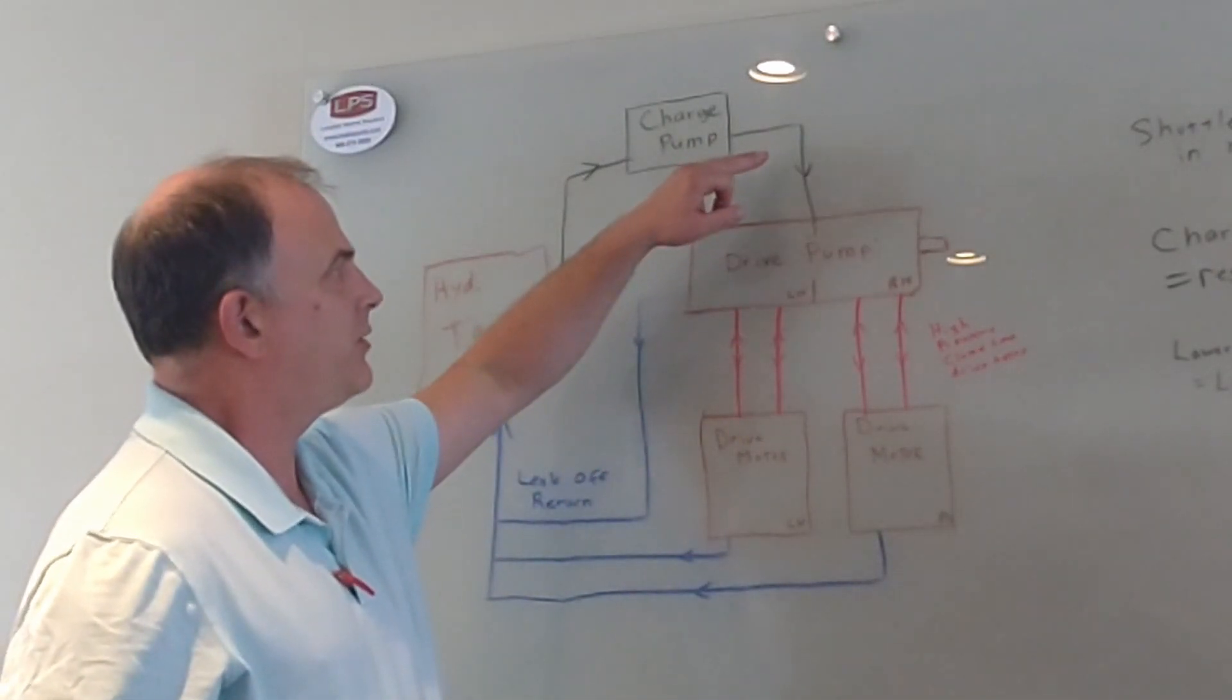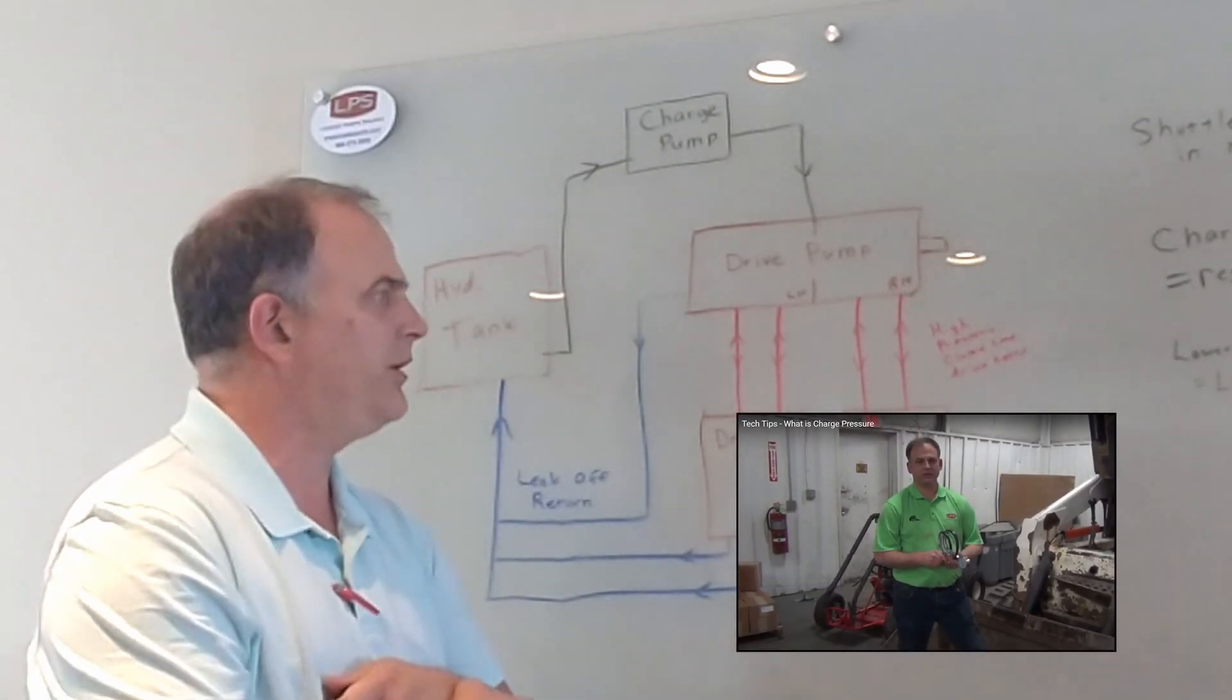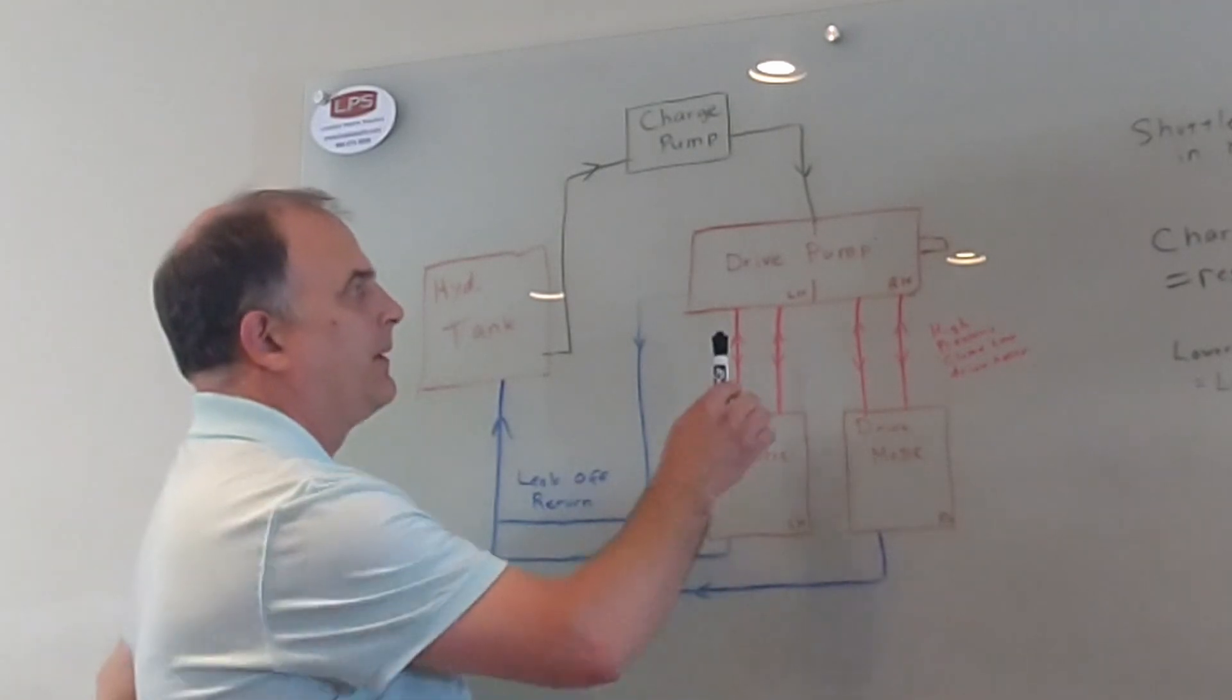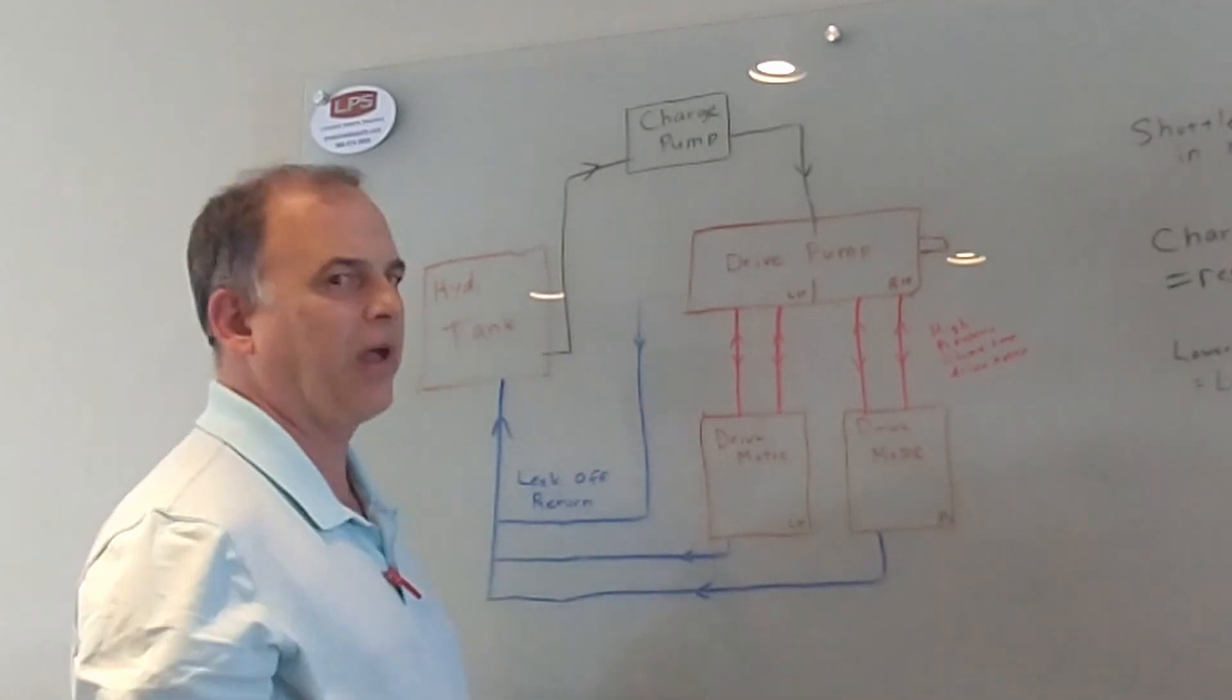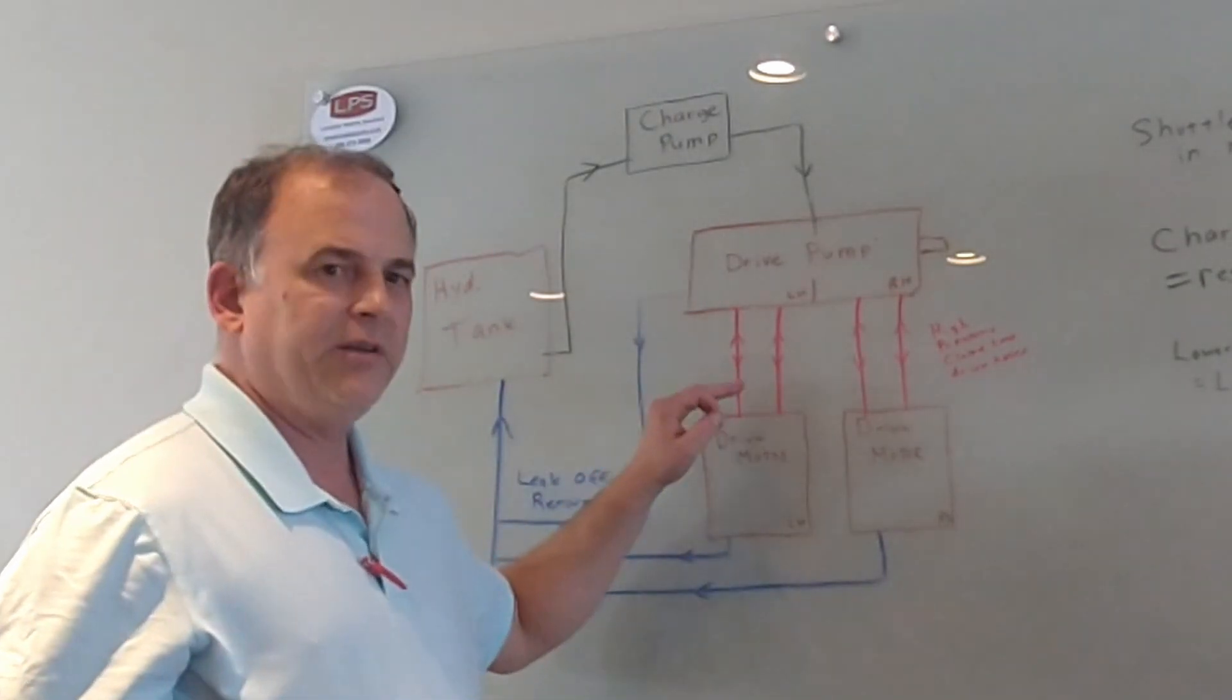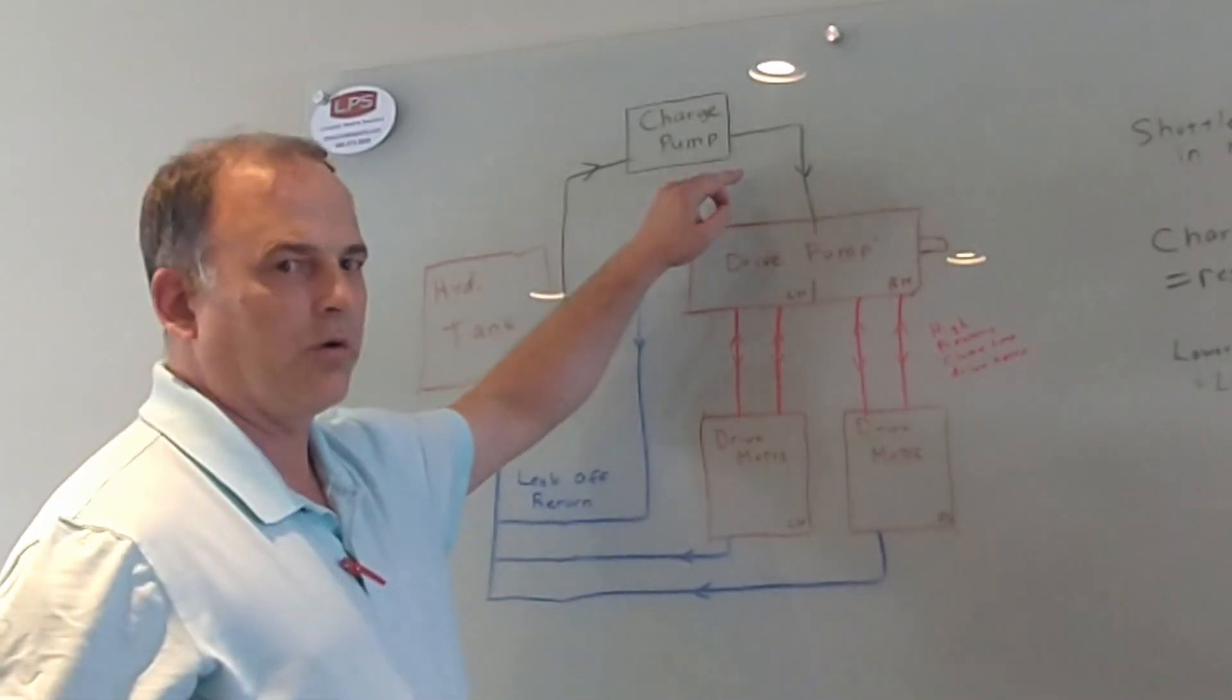But we have the charge pressure that we can measure. I'm not telling you where to measure it in this video - we got another one out that tells you where to measure it. What I am trying, the point I'm trying to make is: the more restriction you have to your charge flow, the higher your charge pressure is, up to the relief valve setting. And if there's damage somewhere in the system that decreases the restriction to flow, it escapes to the tank and it lowers your charge pressure.